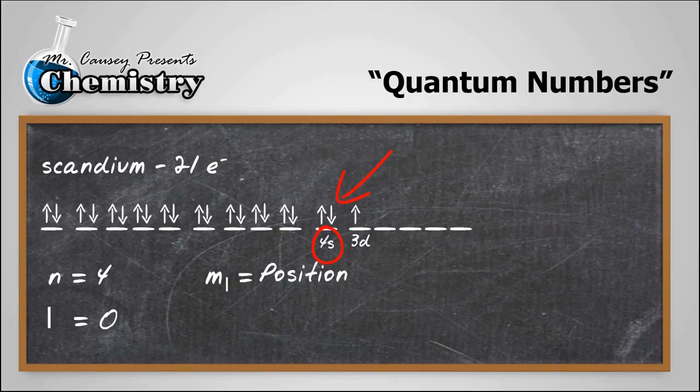And then m sub l tells us the position. And we see that, again, it is in an S orbital. And there's only one position, so that's zero. Then m sub s tells us the spin. And it's the second one in. And I usually consider that to be negative one half.